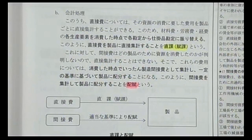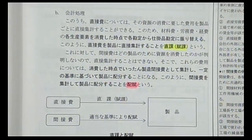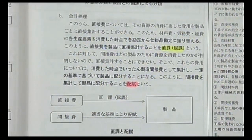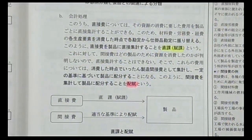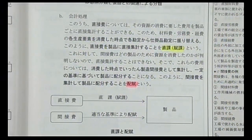直課はそれ以上正確な計算ができない最も公平な方法です。配賦は人数基準で割り勘すると800円の定食しか食べていない人が1000円負担することになり不公平になる可能性があります。原価計算においては配賦をどう正確に行うかが最大のポイントです。